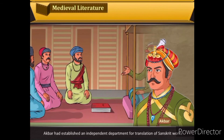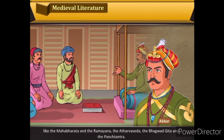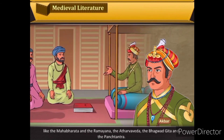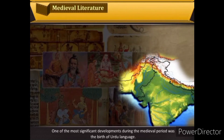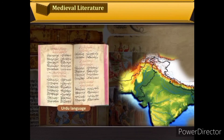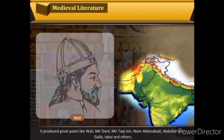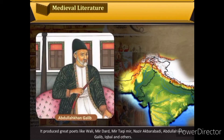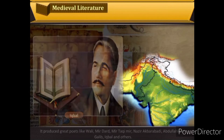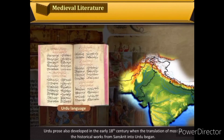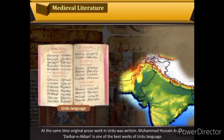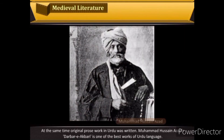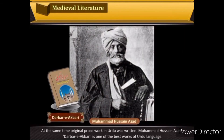Akbar established an independent department for translation of Sanskrit works like the Mahabharata, the Ramayana, the Atharva Veda, the Bhagavad Gita and the Panchatantra. One of the most significant developments during the medieval period was the birth of the Urdu language. This new language produced great poets like Wali, Mir Dard, Mir Taqi Mir, Nazir Akbarabadi, Abdullah Khan Ghalib, Iqbal and others. Muhammad Husain Azad's Darbar-e-Akbari is one of the best works of Urdu prose.